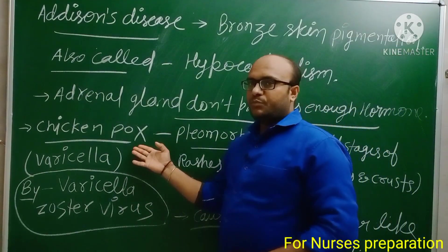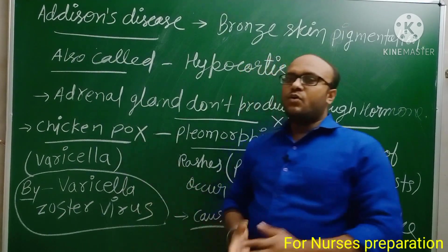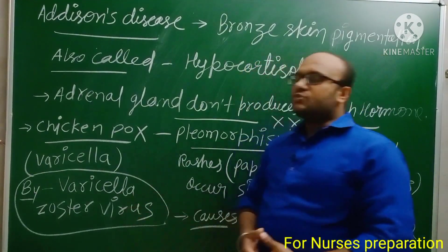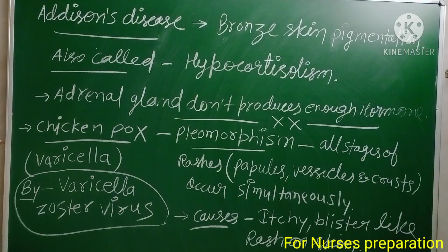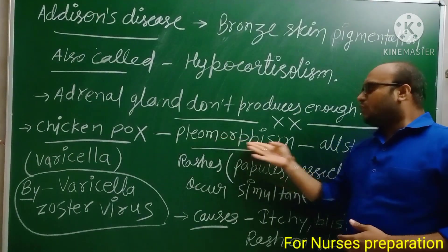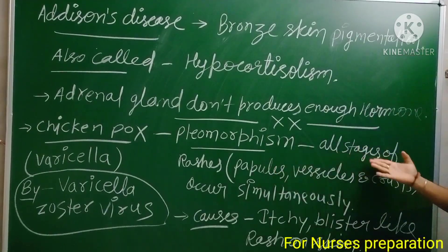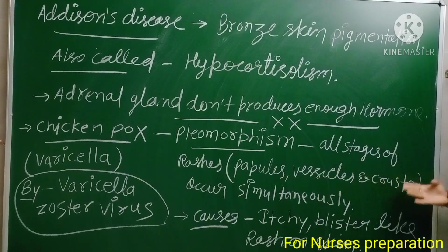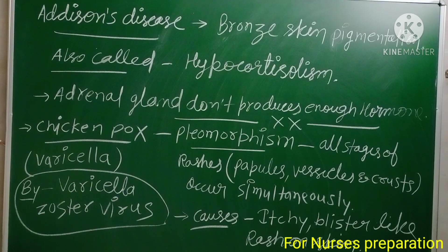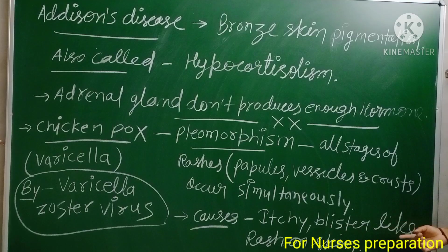The second disease is Chicken pox, also known as varicella. It is caused by the varicella zoster virus. The important feature of this disease is pleomorphism — a condition in which all stages of rashes, such as papules, vesicles, and crust, are seen at the same time. In Chicken pox, itchy blister-like rashes are found on the skin.